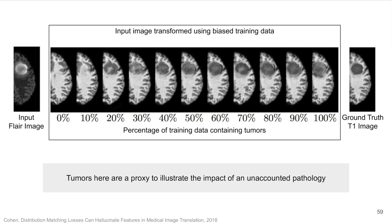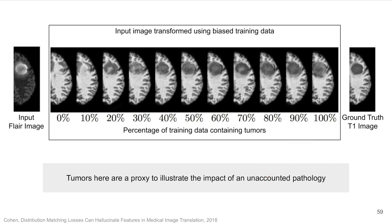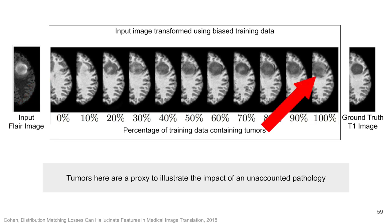Here are generated images from 11 different CycleGANs, all trained with a different biased ratio of samples with tumors. The model here is transforming from a FLAIR MRI image to a T1 MRI. If no tumors are present in the training data, the model tries to remove the tumor, and if the training dataset is all tumors, then the tumor is enlarged.